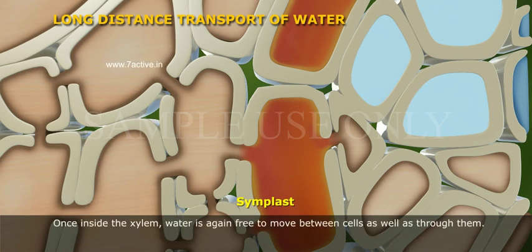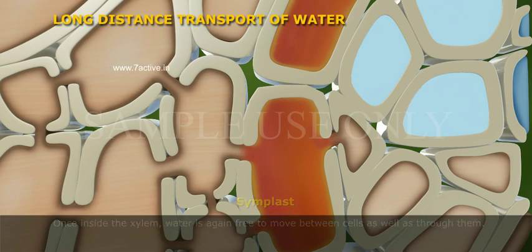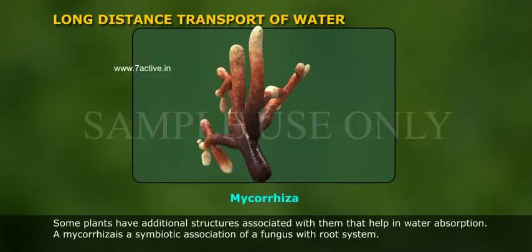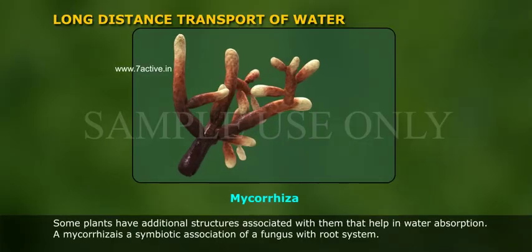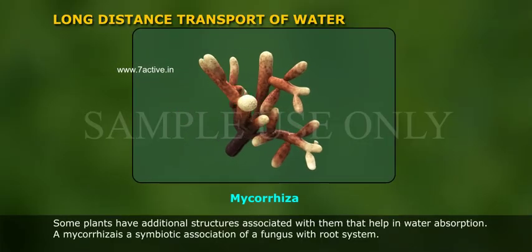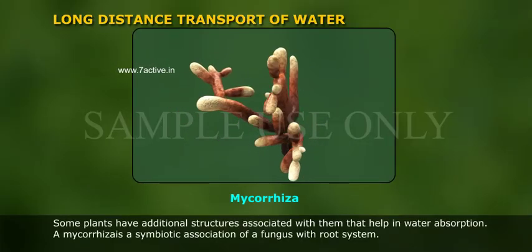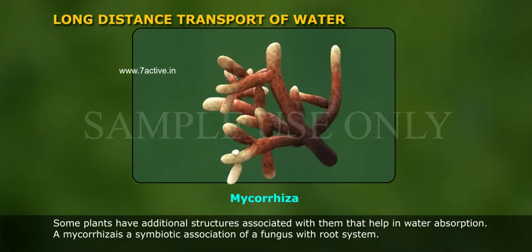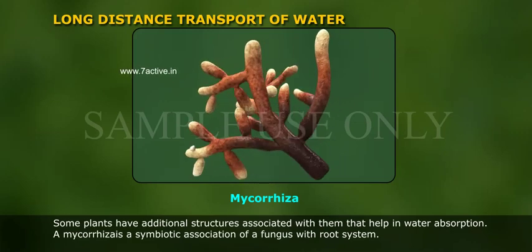Once inside the xylem, water is again free to move between cells as well as through them. Some plants have additional structures associated with them that help in water absorption.